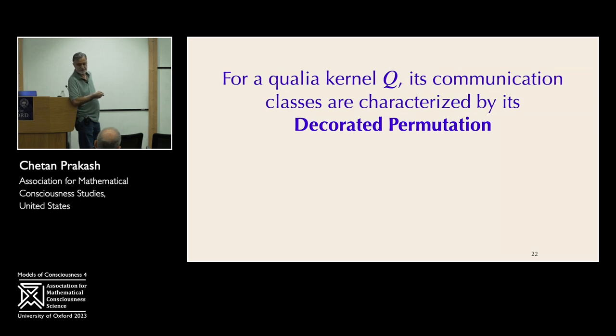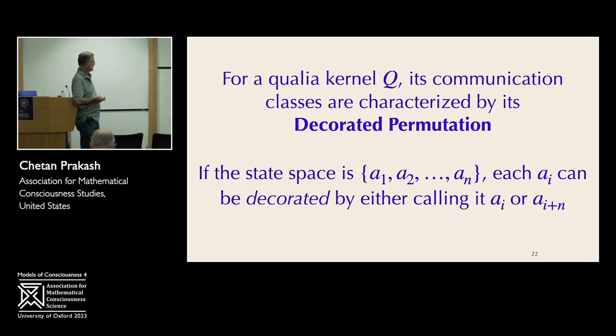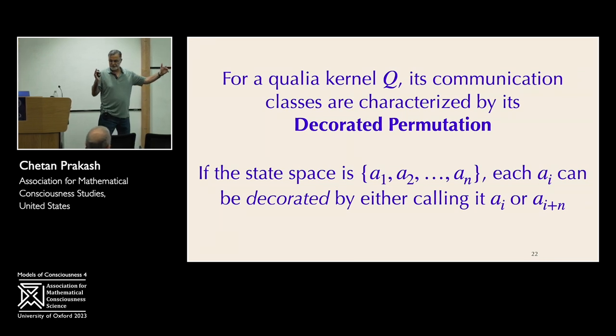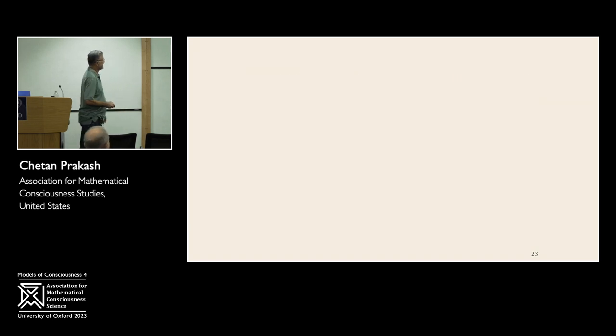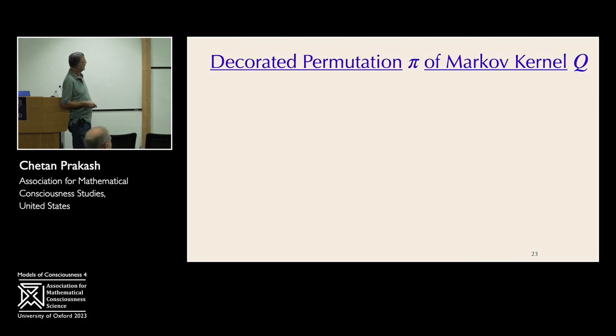So now I have to tell you what a decorated permutation is. It's basically a permutation in which you put a little color on some of the entries. That's all you do. And one way to describe it is to say that if the original state space has got N elements, a decorated permutation is one in which you can put an extra decoration on some of these guys. You can either call it AI or the colored version I'm going to call AI plus N. So decorated permutation is a function that takes this N element set into a 2N element set. Five minutes already? Oh. Good Lord.